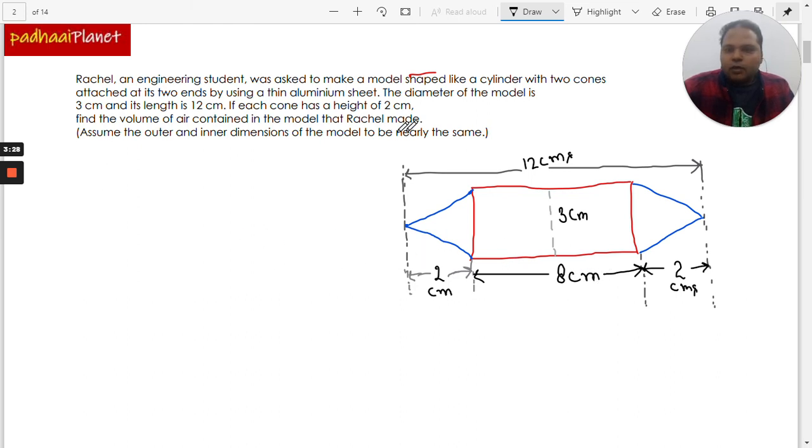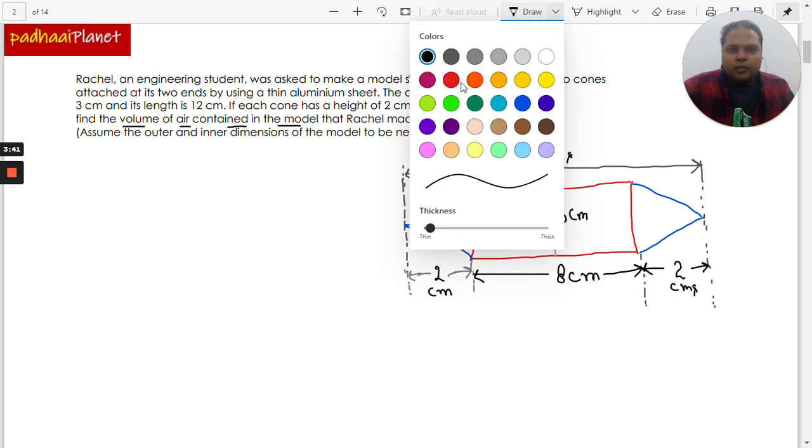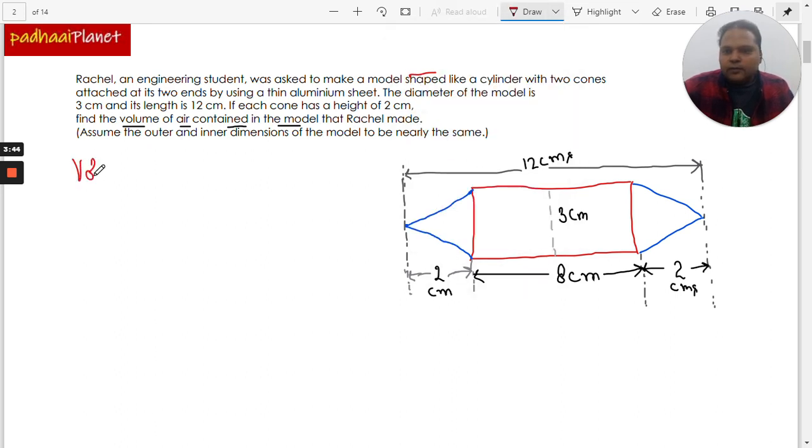Now what we need to find out is the volume of the air contained in the model, which means basically we need to find out the volume of this entire model. The volume of the model is equal to the volume of the cylinder plus the volume of two cones. We can multiply 2 with the volume of one cone.